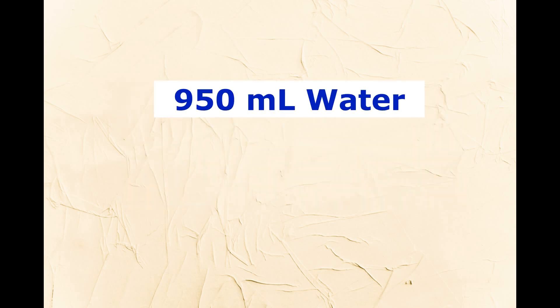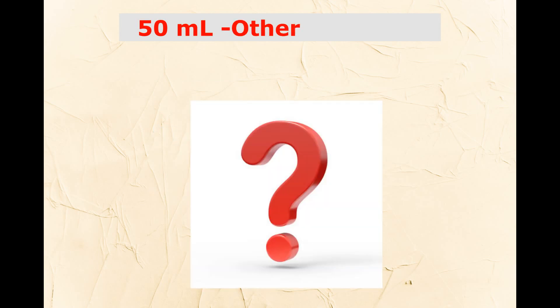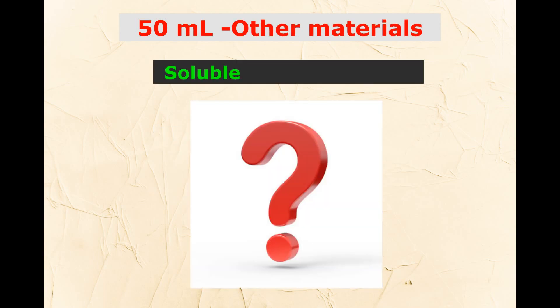In one liter of phenyl solution, nearly 950 ml is water alone, and the remaining 50 ml is all the other materials. The key understanding here is: if there is any layer separation in phenyl solution, it is only from this 50 ml. Any one or more material from this 50 ml is not getting dissolved in water.